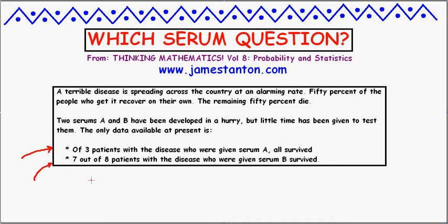Option B, serum B, actually has a bigger sample size, but not everyone survived with serum B. So the question is, which is actually better? The way to work through this might be to ask: I've got the disease, I don't know if A and B are having any serious effect at all — what could I go on?